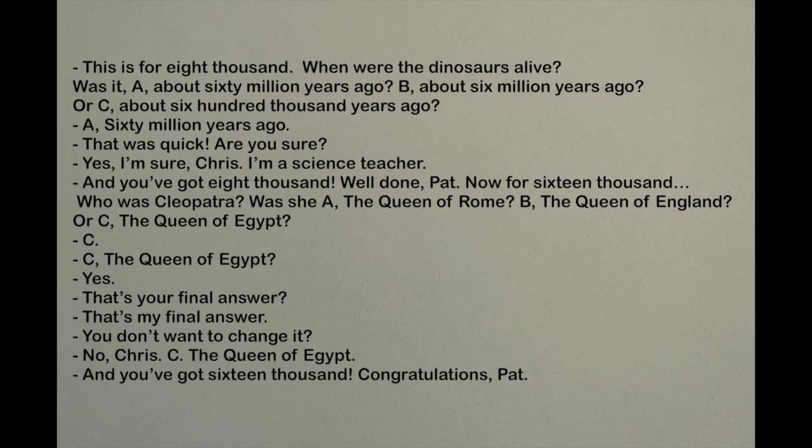Now for 16,000. Who was Cleopatra? Was she A, the Queen of Rome, B, the Queen of England, or C, the Queen of Egypt? C. C, the Queen of Egypt? Yes. That's your final answer. That's my final answer. You don't want to change it? No, Chris. C, the Queen of Egypt. And you've got 16,000! Congratulations, Pat!